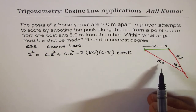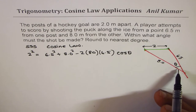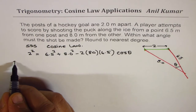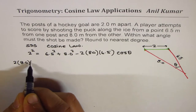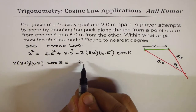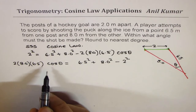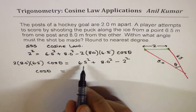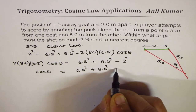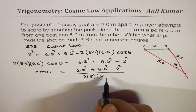The square of a side equals the sum of the squares of the other two sides minus 2 times those two sides times the cosine of the included angle. Rearranging and bringing all terms to the left side, we get: 2 times 8.0 times 6.5 times cos theta equals 6.5 squared plus 8.0 squared minus 2 squared. From here, cos theta equals 6.5 squared plus 8.0 squared minus 2 squared, all divided by 2 times 8 times 6.5.